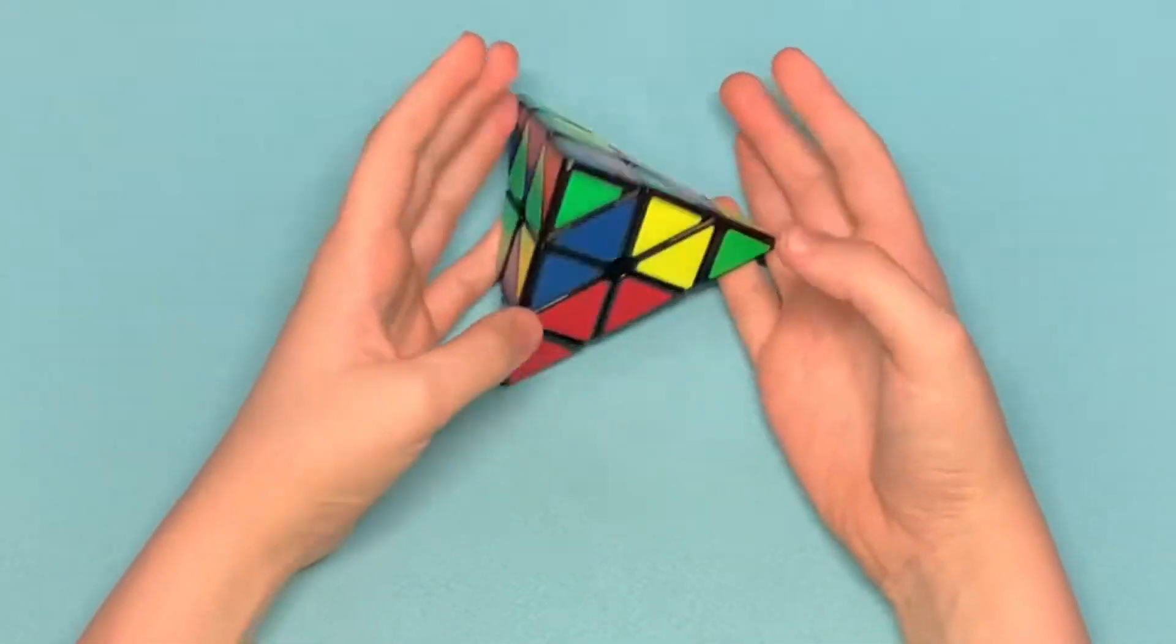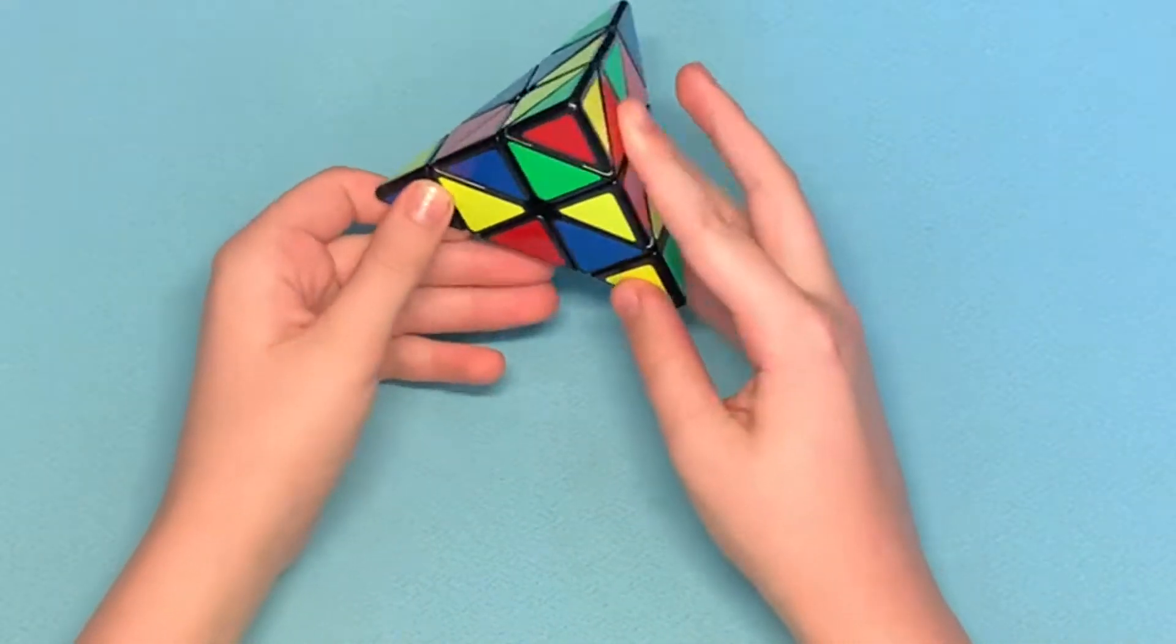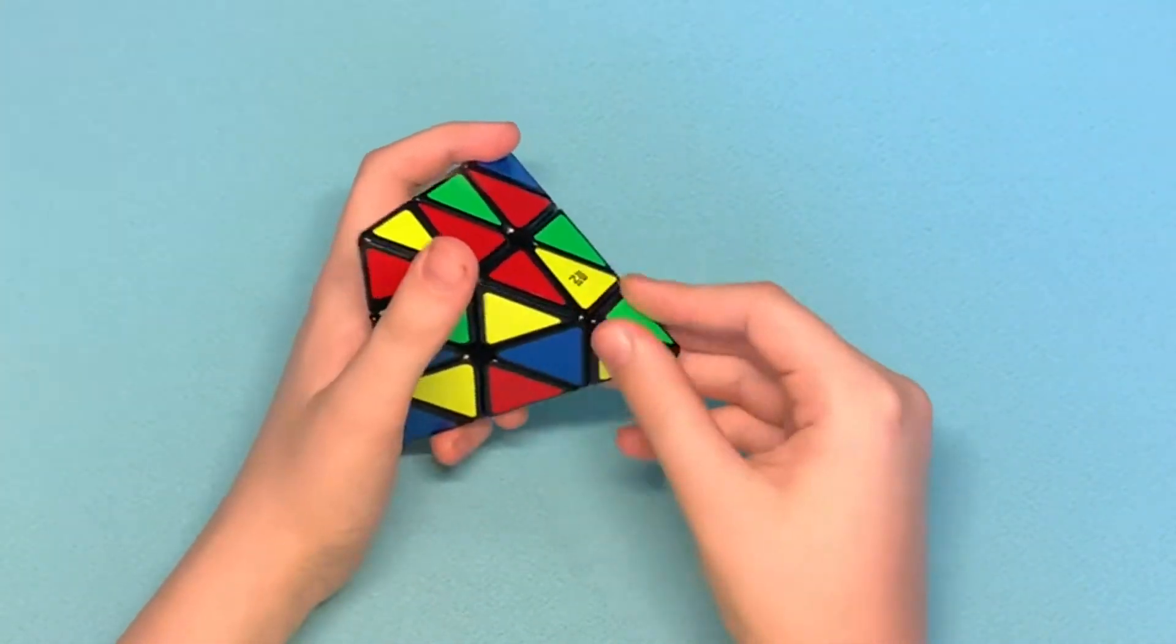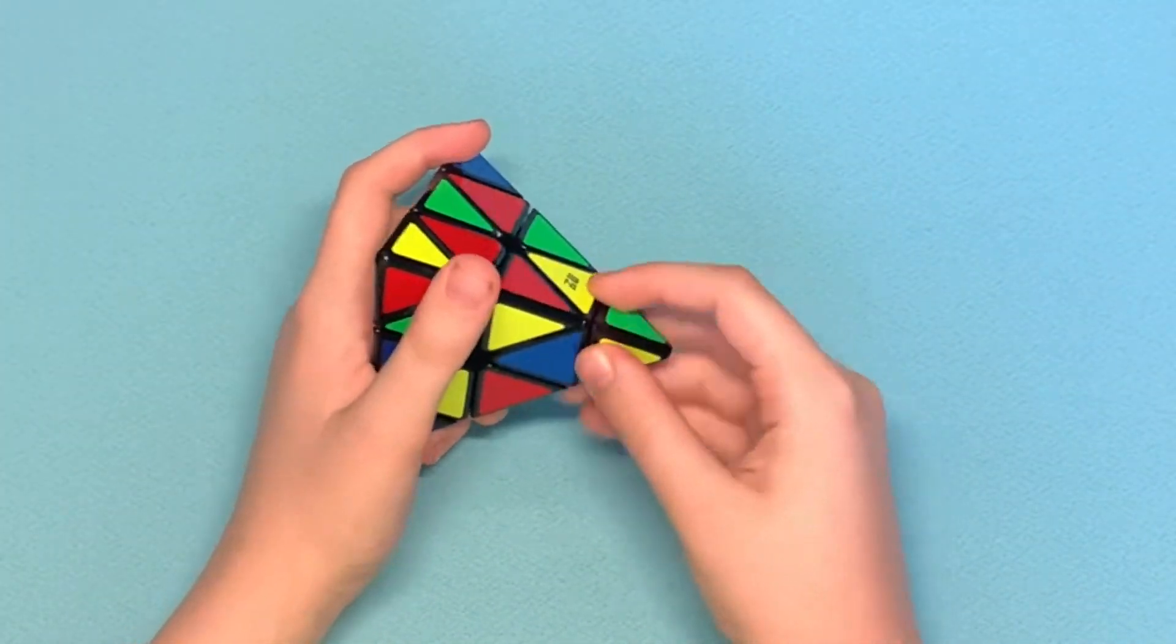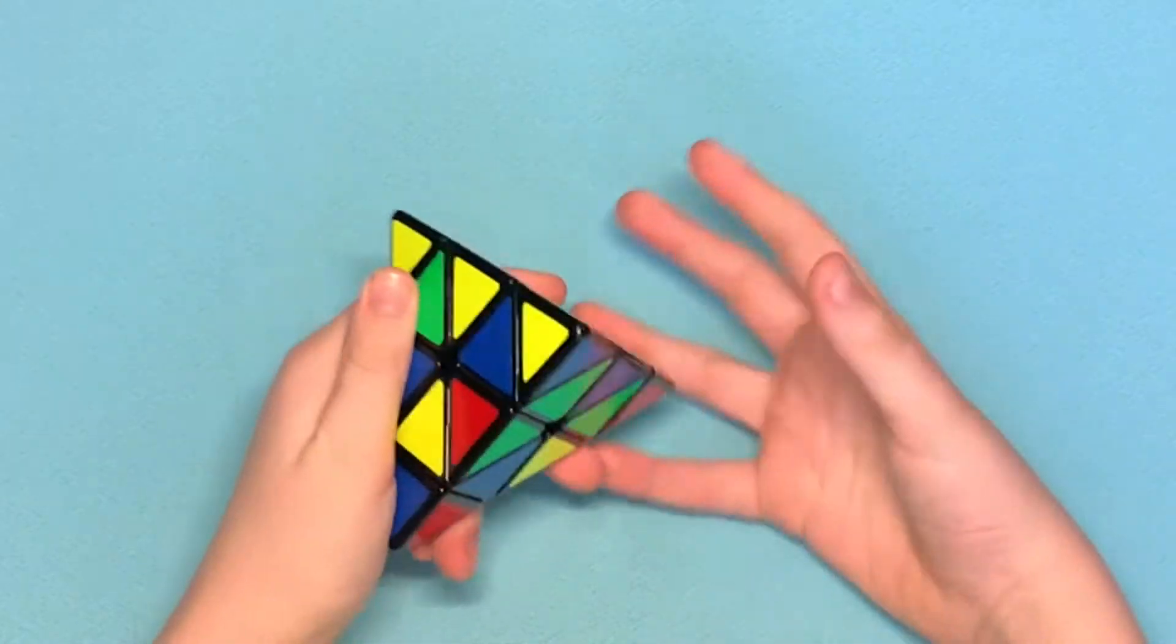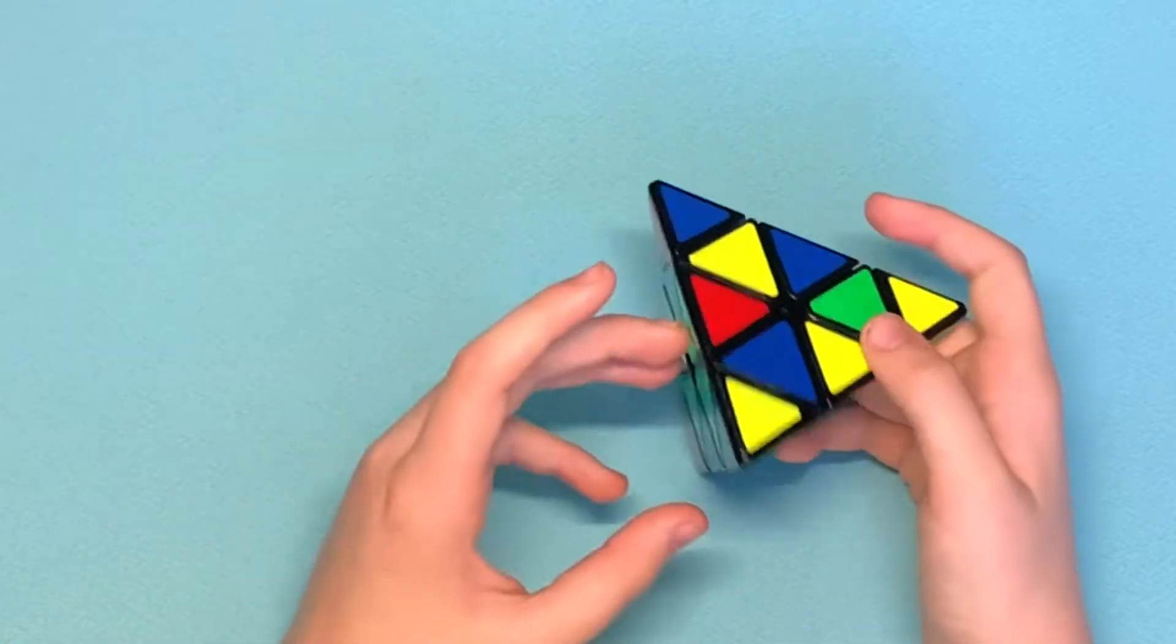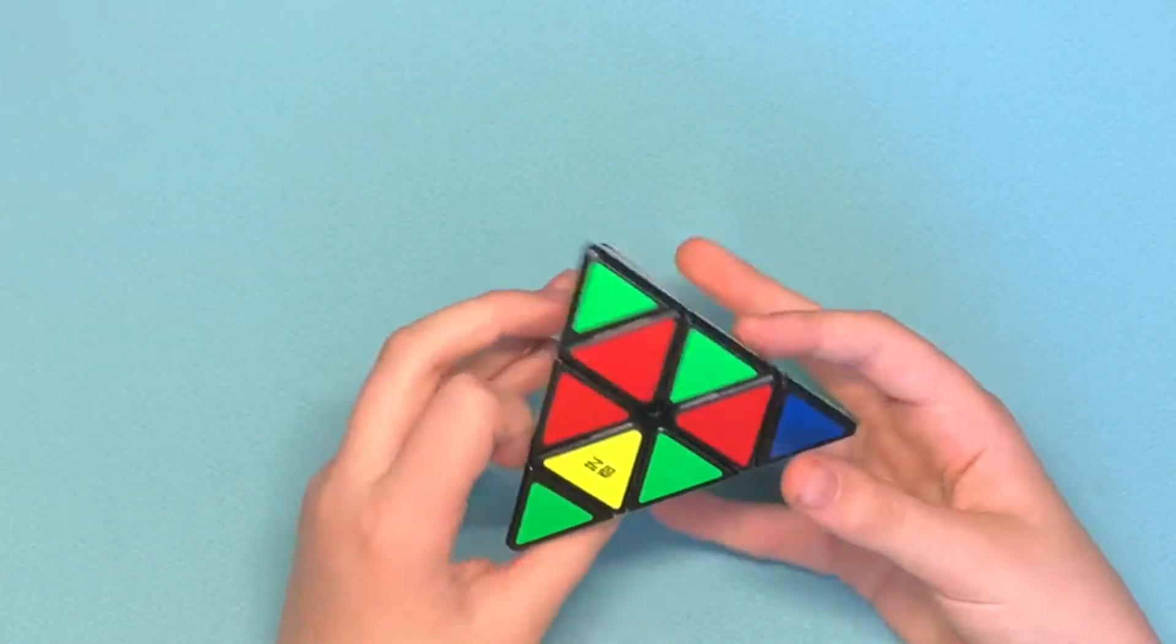So here is the Pyraminx. It comes with two varieties of turning instead of the Rubik's Cube, where you can only do one. So this might be a little hard, but it's actually probably one of the easier ones.